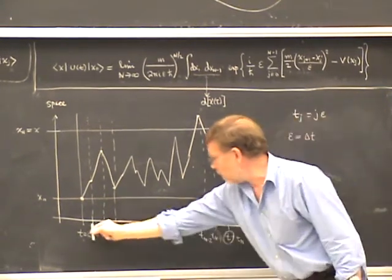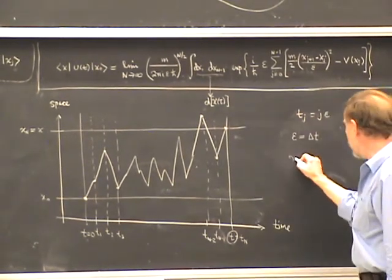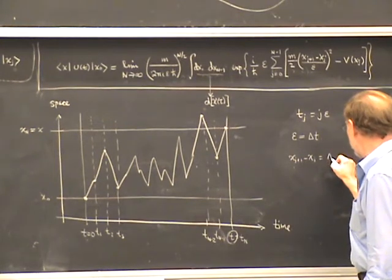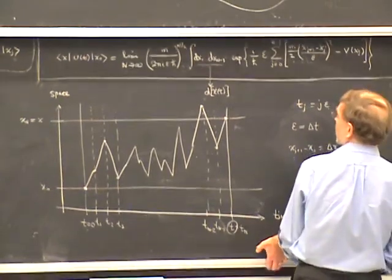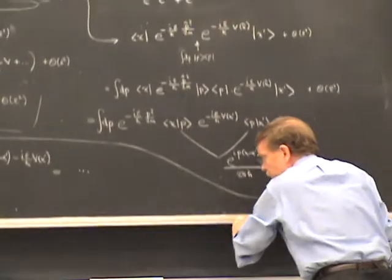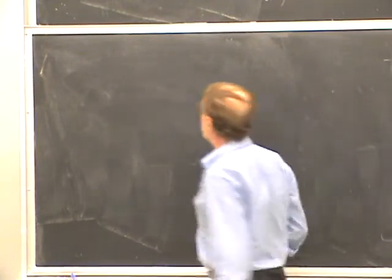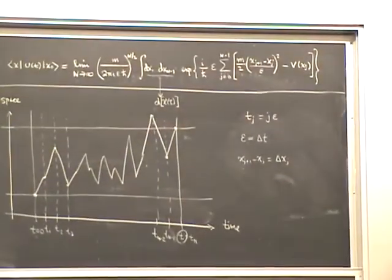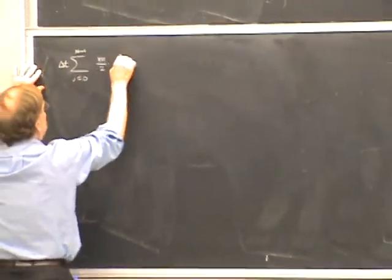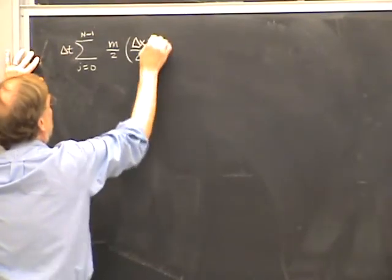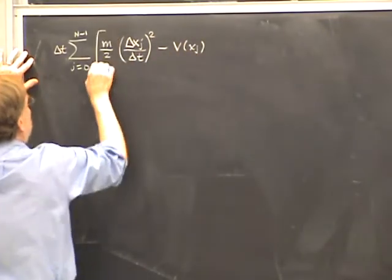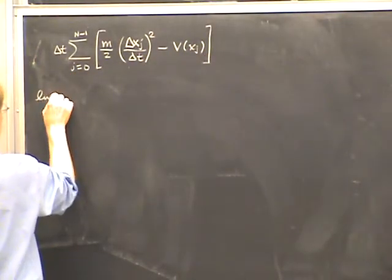This leads to a more abbreviated notation. We can replace the dx₁ through dx_{N-1} with a notation d of x(τ), representing the volume element in path space. As for the exponent, using δt for epsilon (the time increment) and δx_j for X_{j+1} minus X_j, the exponent looks like a sum over j from 0 to N-1 of δt times [M over 2 times (δx_j over δt) squared minus V(X_j)].